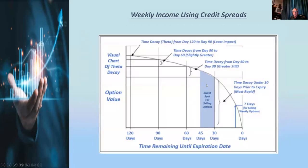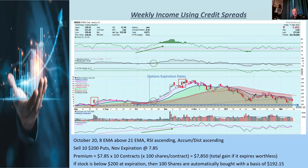This chart shows time decay clearly. When you're buying options, you want to be on the left-hand side, going as many days out as possible to reduce time decay as you move toward expiration. If you're selling options, you want to be on the right-hand side — you want that time decay working for you. Look what happens within seven days: it just drops off a cliff. That's how we're going to generate weekly income.